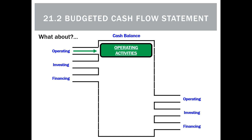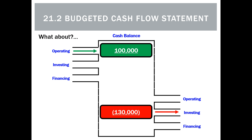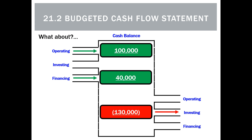What about a situation where we generate $100,000 from operating, spend $130,000 in investing, and also spend $40,000 from financing? Although our bank balance has increased by $10,000 for the period, that financing outflow carries interest, and if it originally came from the owner as capital contributions, it means the owner is not making money from the business — they're supporting it.